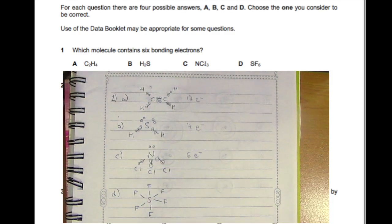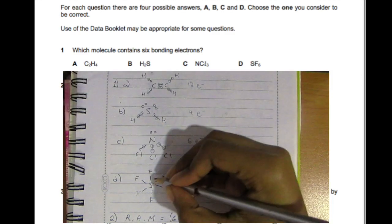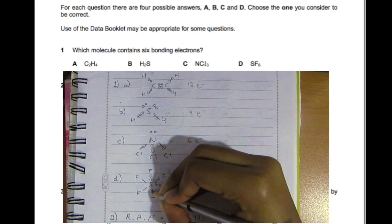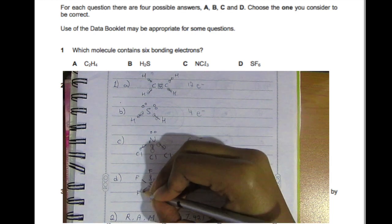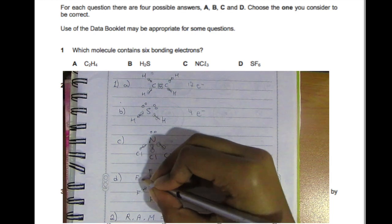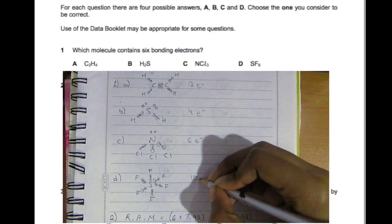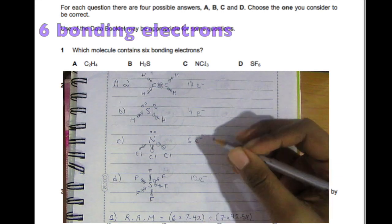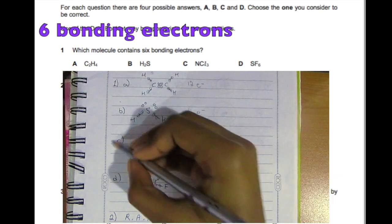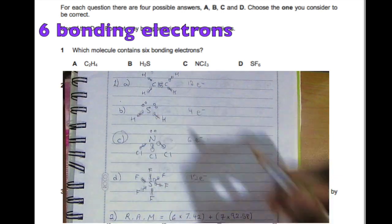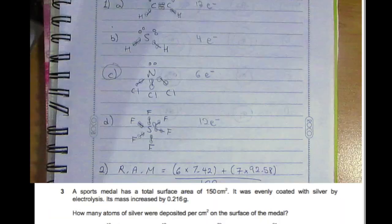And for this last one, counting one through twelve gives twelve electrons. They asked us for the one with six electrons, so C is your answer.